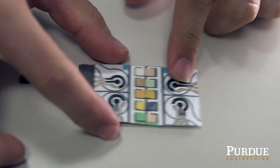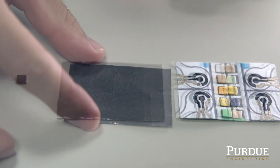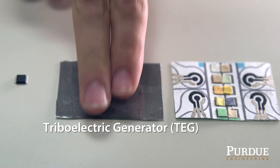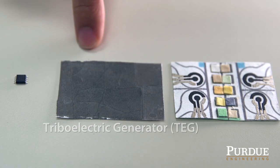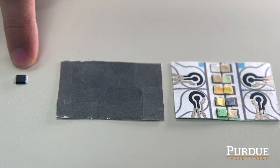On the bottom there is a triboelectric generator that the user can tap to generate a peak voltage that is transferred into this chip.